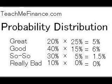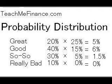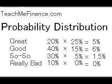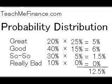For example: 20% times 25% equals 5%. 40% times 15% equals 6%. 30% times 5% equals 1.5%, and 10% times 0% equals 0%. Now you add up the numbers in the right-hand column — 5, 6, 1.5, and 0 — and you get a total of 12.5%.